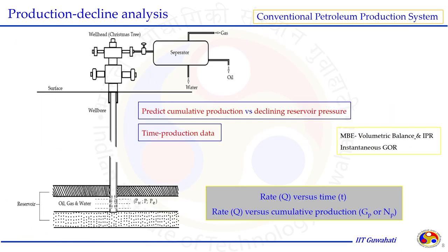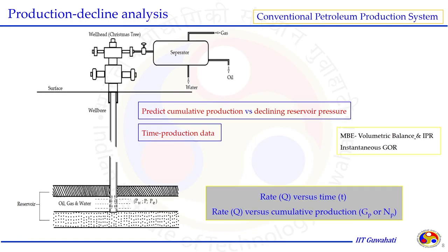The next topic is production decline analysis. In a conventional production system, we produce fluid (oil or gas) and measure cumulative production versus declining reservoir pressure. The reservoir pressure P_E and P_WF both decline over time as production continues, since the pressure energy responsible for flow diminishes. We collect two types of data: cumulative production versus pressure, and time-dependent production data. These data are very useful to characterize the reservoir and evaluate future performance.